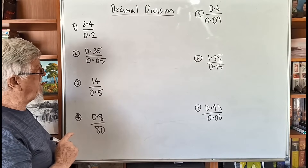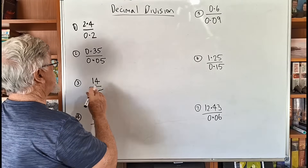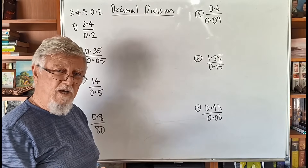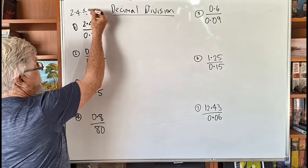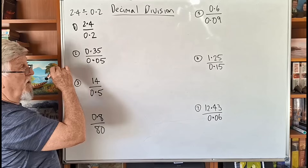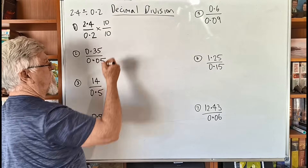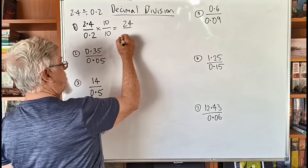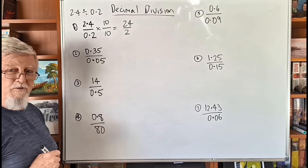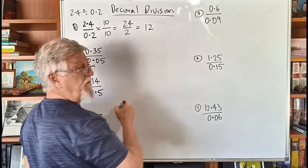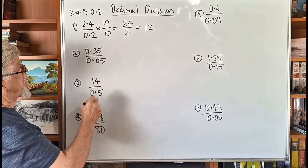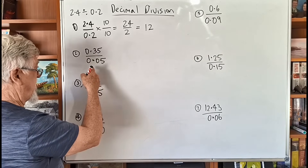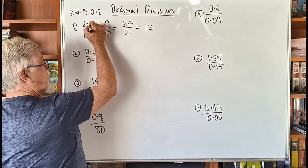First, let's look at how to divide decimals. If the question is 2.4 divided by 0.2, I like to write it as a numerator over a denominator — that's just a divide. Then multiply the top by 10 and the bottom by 10, which moves the decimal once on each. You get 24 over 2, and the answer is simply 12.